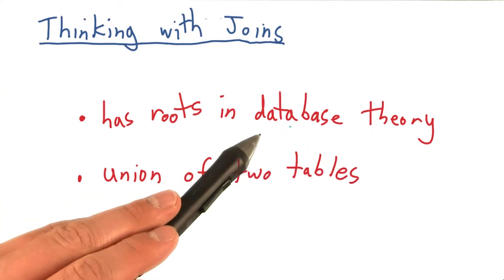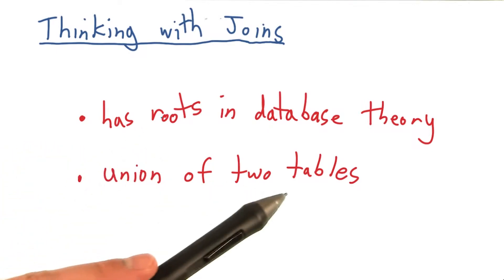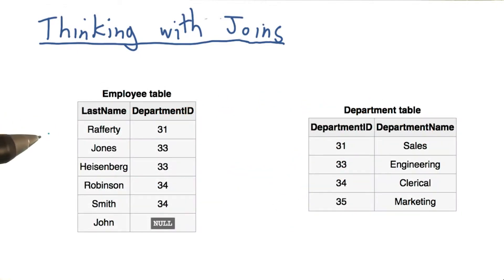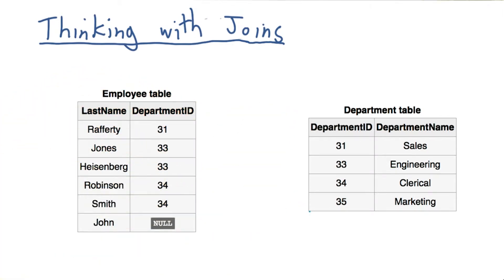Joins emerged out of relational database theory as a way to associate two different tables or spreadsheets. Now, to understand what a join is, imagine we have two tables. Or in this case, you can think of them as CSVs or TSVs.